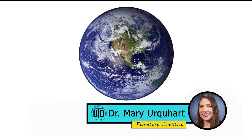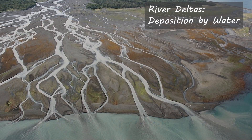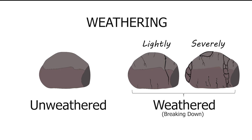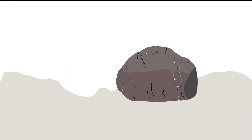Earth is a dynamic, ever-changing system, and its surface is constantly being reshaped. Did you know that many landforms you can see today result from slow changes over many years? Some of these changes are related to the processes of weathering and erosion.